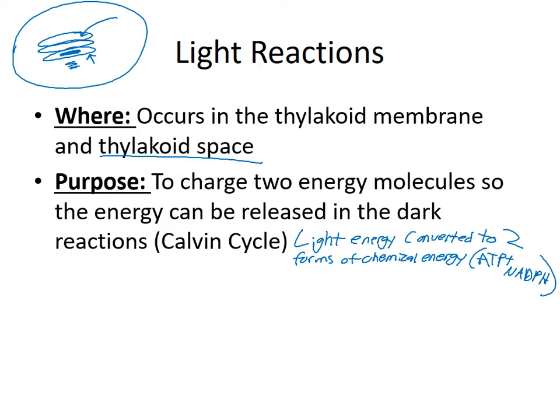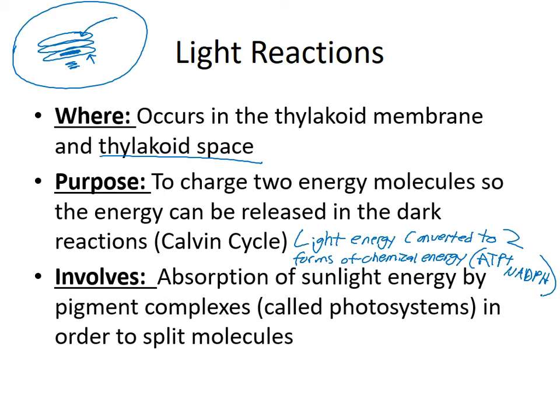We are taking light energy and converting it to two forms of chemical energy. I think of those like batteries — batteries are a form of chemical energy. So think of it as taking light energy and converting it into like a double-A battery and a nine-volt battery, and you're going to take those batteries somewhere else and release their energy to power something else.